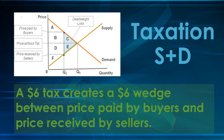The answer is no, it doesn't make any difference. All that a $6 tax does is it drives a $6 wedge between the price that the buyers actually have to pay and the price that the sellers actually receive. It doesn't matter if the tax is placed on the buyers or sellers — all we need to know is that there's this $6 difference between these two prices.